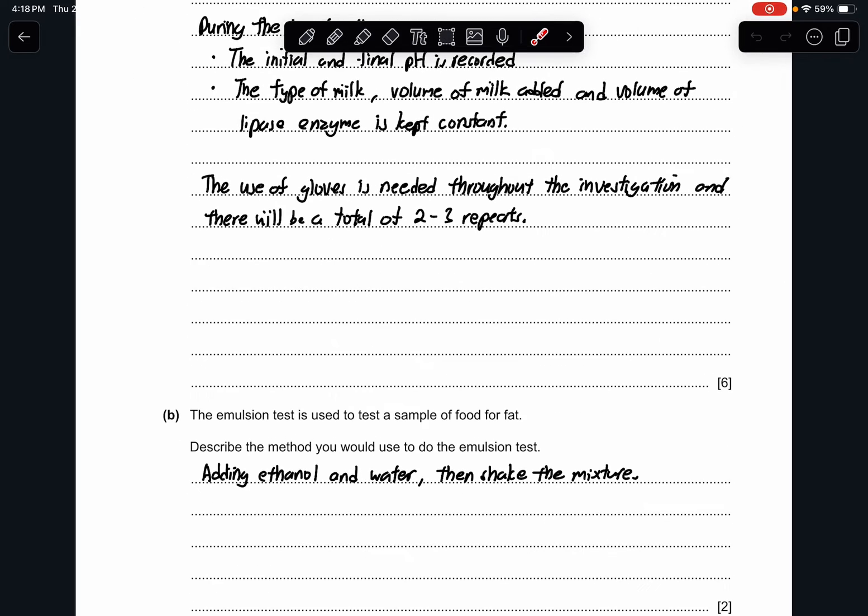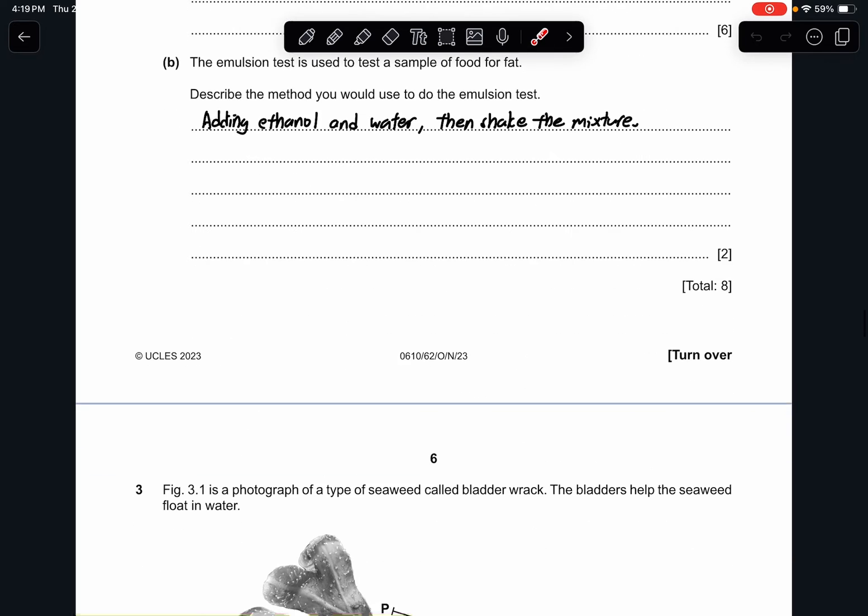Part B. The emulsion test is used to test a sample of food for fat. Describe the method you would use to do the emulsion test. This is something unusual. How you would do is by adding ethanol and water, and you just shake them. That's all.